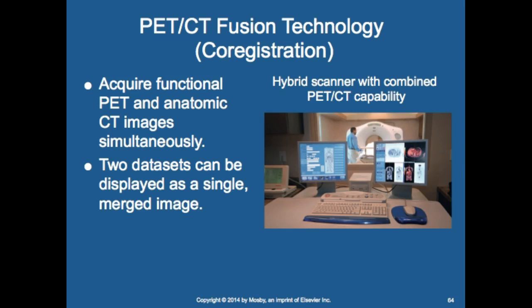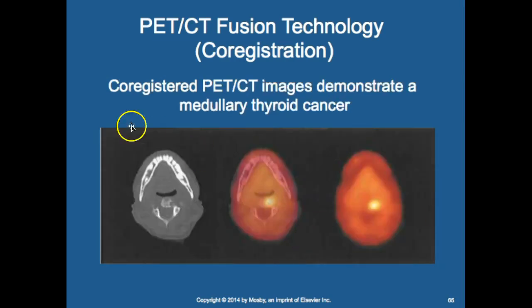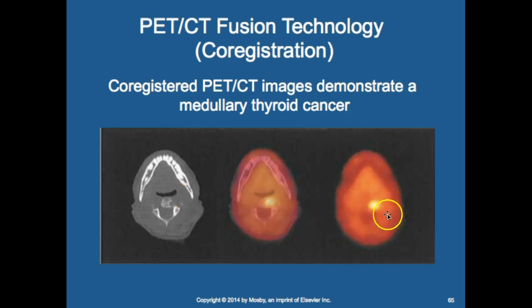PET/CT acquires functional PET and anatomical CT images simultaneously. The two datasets can be displayed as a single merged image to localize tumors. This hybrid scanner scans the patient with gamma cameras, then through the CT, and the software automatically merges the two. You can see the CT scan, the nuclear medicine scan, and the two superimposed together to pinpoint exactly where tumors are.